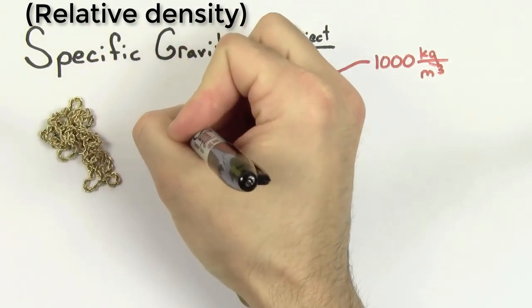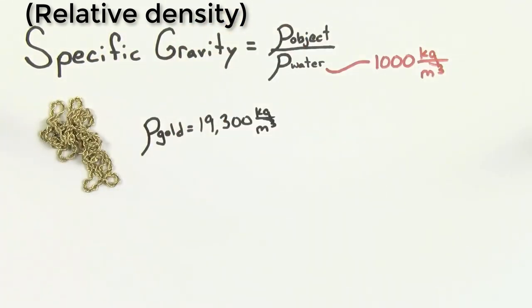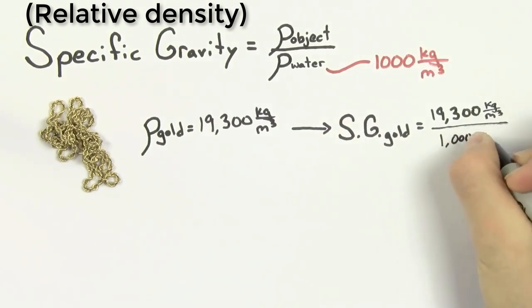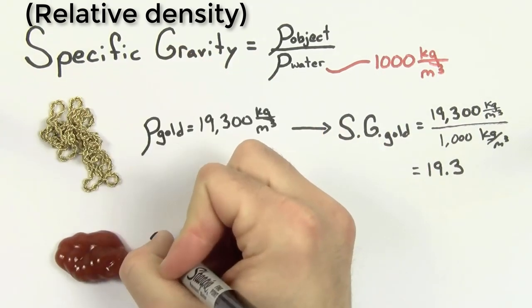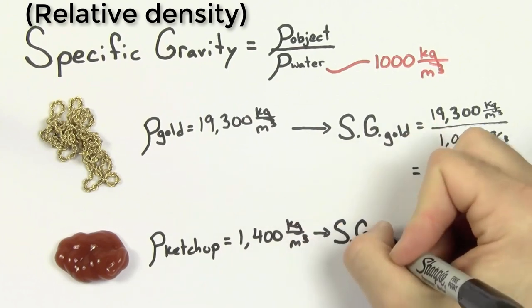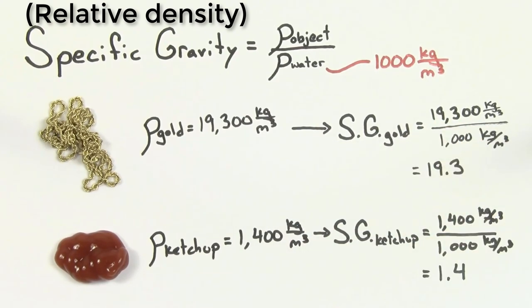For instance, the density of gold is 19,300 kilograms per meter cubed, so the specific gravity of gold is 19.3. The density of ketchup is 1,400 kilograms per meter cubed, so the specific gravity of ketchup is 1.4.